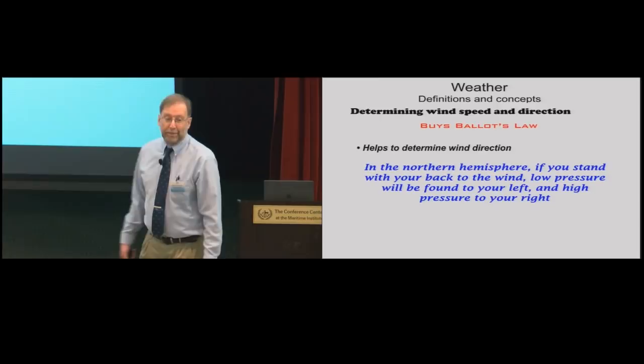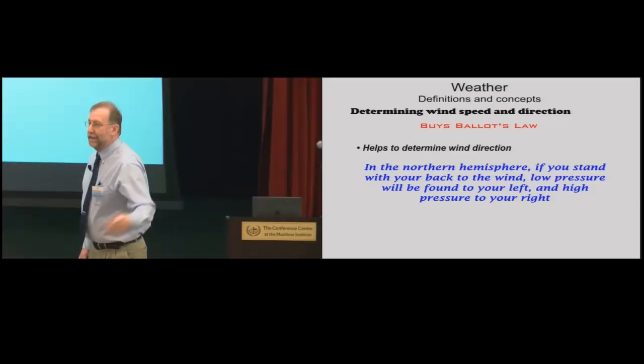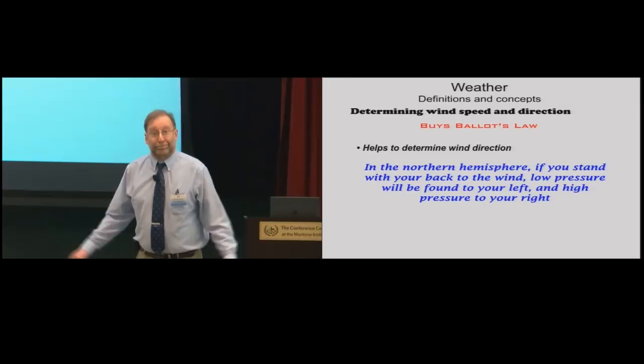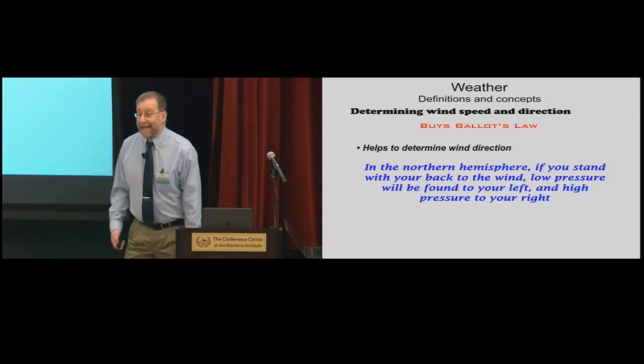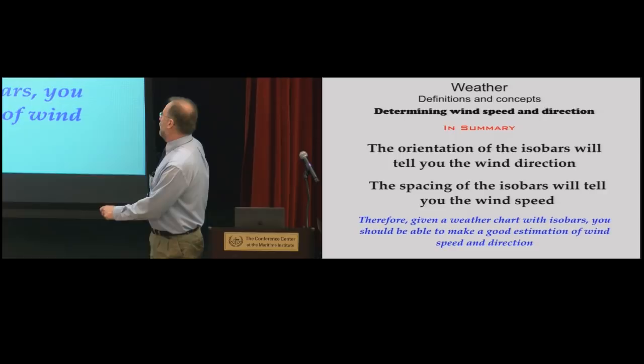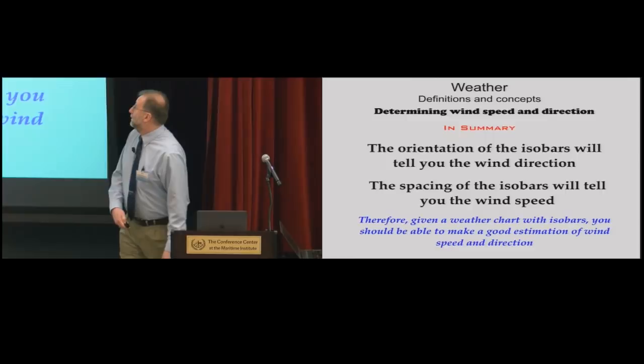Buys-Ballot's Law — named after a Dutch meteorologist — states that in the Northern Hemisphere, if you stand with your back to the wind, low pressure is found to your left and high pressure to your right. Back in the 1600s when he came up with this, not all ships even had barometers, so it was quite a discovery. We still use it today. If you have a weather chart with isobars, you should be able to make a good estimate of wind speed and direction.